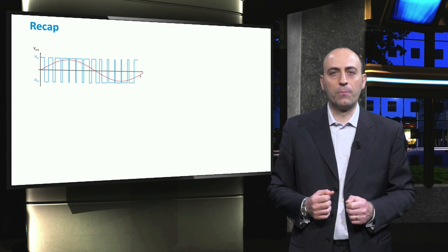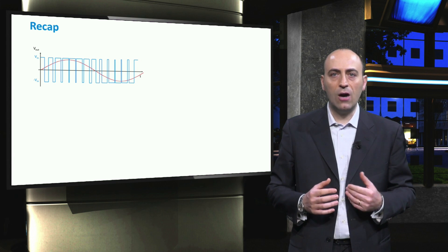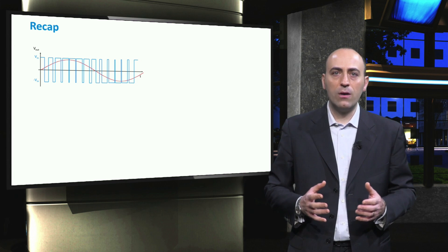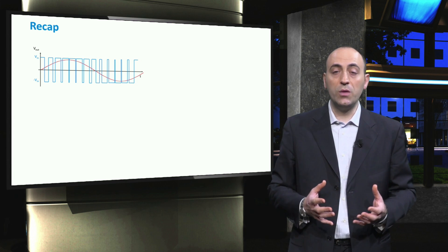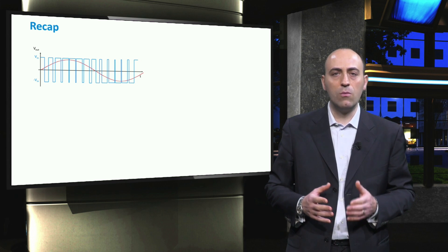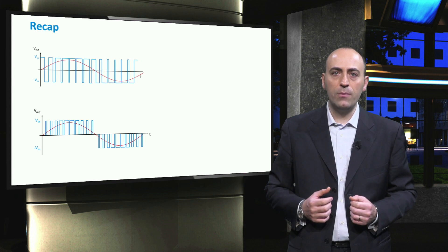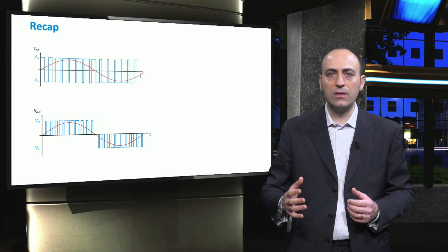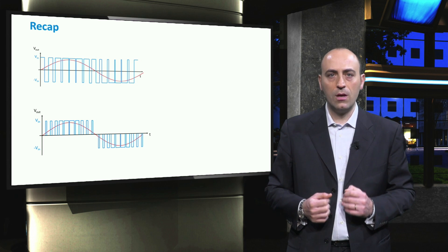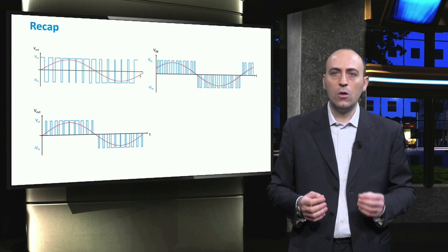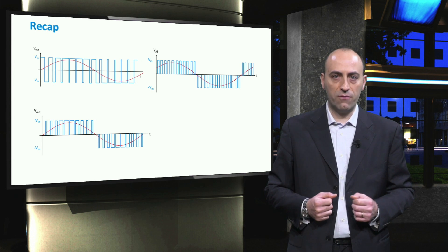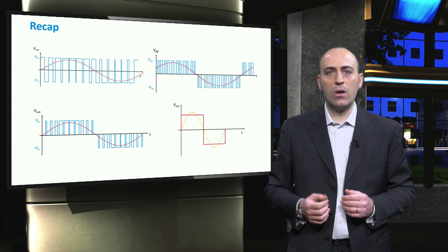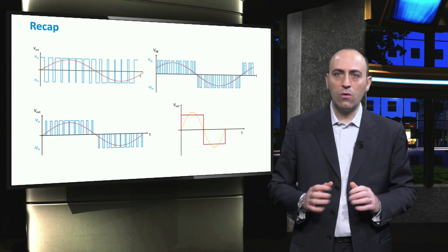To recap what we have seen in this video: the most used technique to modulate an output AC wave from a rather constant DC input is the Pulse Width Modulation, or PWM. The bipolar type acts simultaneously on the four switches of the inverter and gives a signal that goes from plus V input to minus V input. The unipolar type uses two input signals and draws in the first half period a signal that goes from V input to zero, and in the second half period a signal that goes from zero to minus V input. PWM can also be applied to three-phase inverters to obtain three waves with a 120 degrees phase difference. Finally, we saw a comparison between the single-phase PWM in linear mode and in square wave mode. In the next video, we will see the overall configurations of a real inverter.